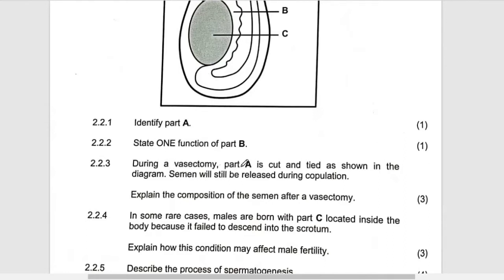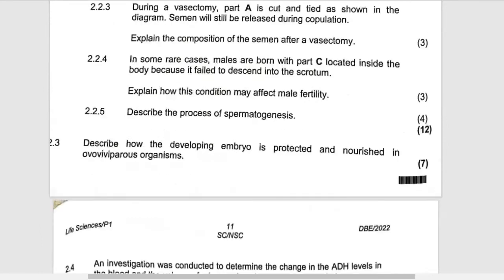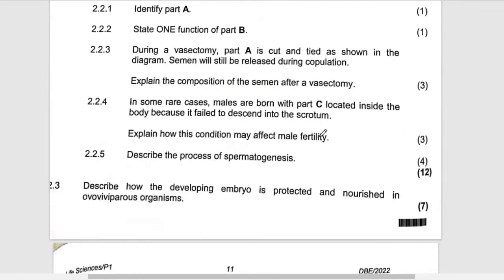Then they are saying: during vasectomy — that is cutting — the cutting of the vas deferens. A is cut and tied as shown in the diagram, so semen will not be released during copulation. Explain the composition of semen after vasectomy.